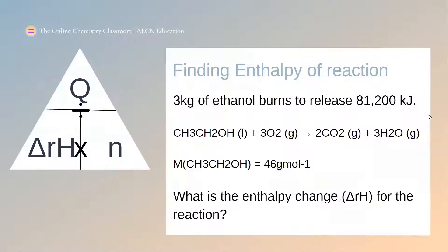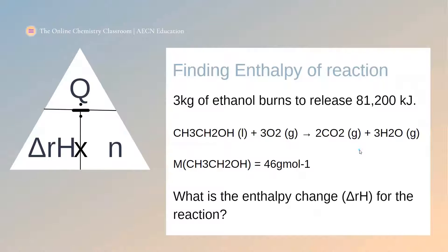So firstly, we will look at how to calculate the enthalpy of reaction, or delta Rh. In this reaction, three kilograms of ethanol burns and releases 81,200 kilojoules of energy. The first thing to do is check the mole ratios in the equation. We are told the amount of ethanol, so we need to know the number of moles of ethanol. In this example, there is one mole of ethanol because there is no number in front of the ethanol.